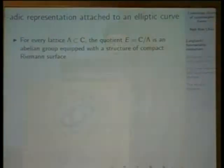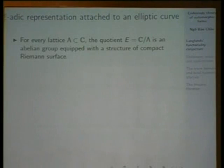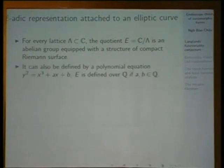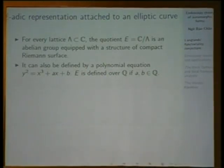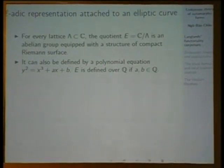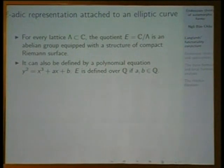It starts with an elliptic curve. The elliptic curve is a quotient of the complex plane by a lattice, so it is an abelian group equipped with a structure of a compact Riemann surface. It can be given by an equation of third degree: y squared equals x cubed plus ax plus b, where a and b are parameters. We say that E, the elliptic curve, is defined over Q, over the rational numbers, if the parameters a and b are rational numbers.